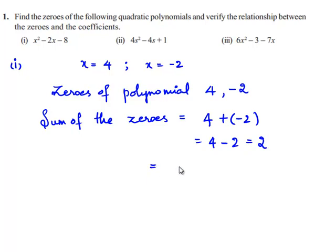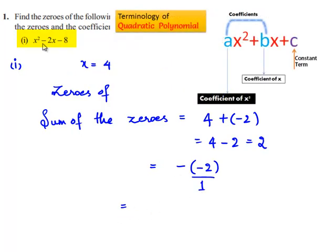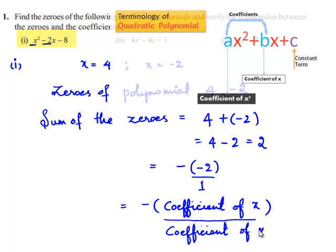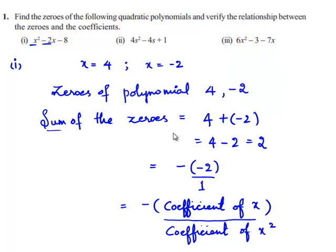This 2 can be written as minus of minus 2 divided by 1. Here minus 2 is the coefficient of x, and in the denominator, 1 is the coefficient of x squared. Therefore, we can say that the sum of the zeros is equal to negative of the coefficient of x divided by the coefficient of x squared.